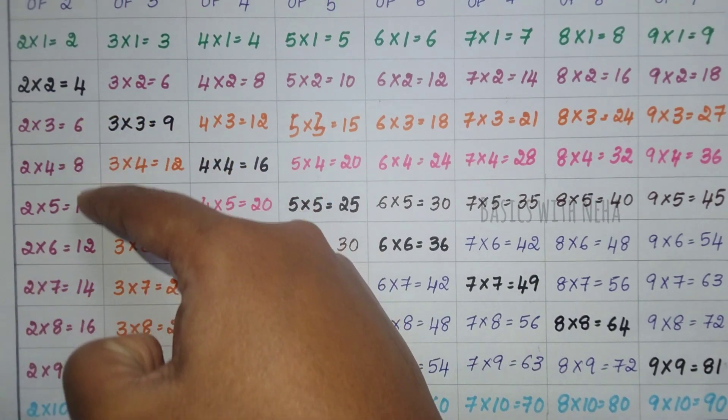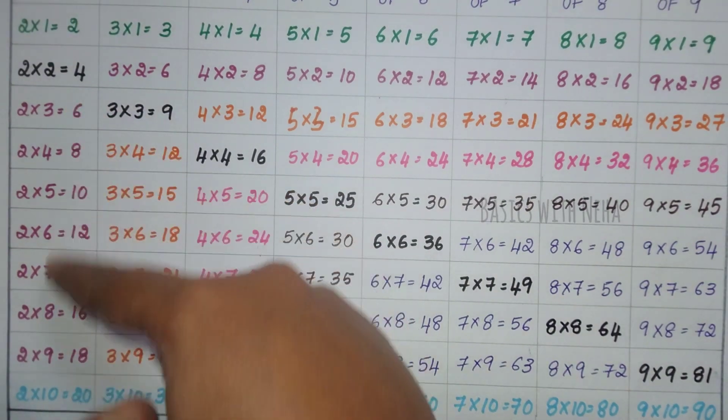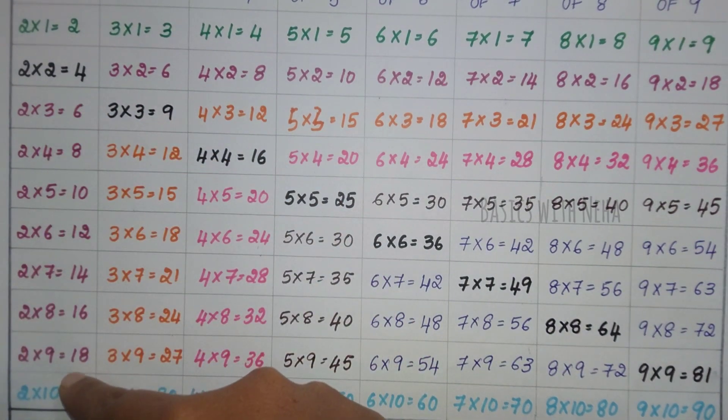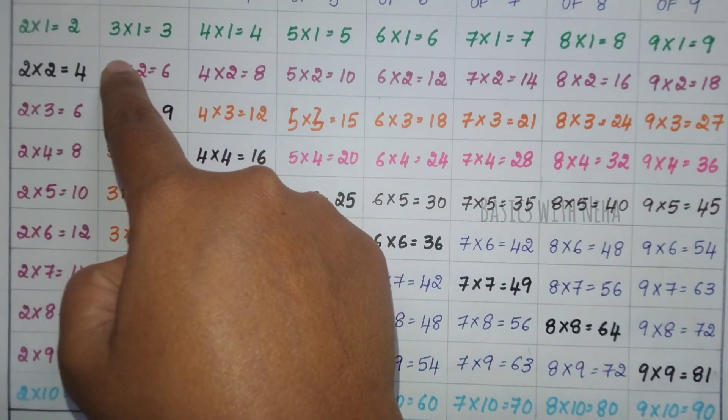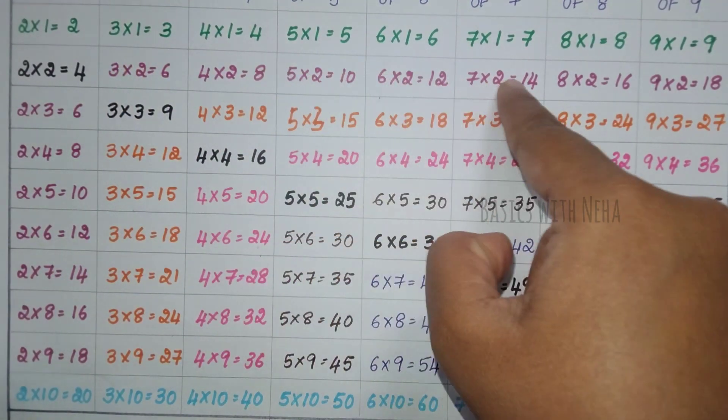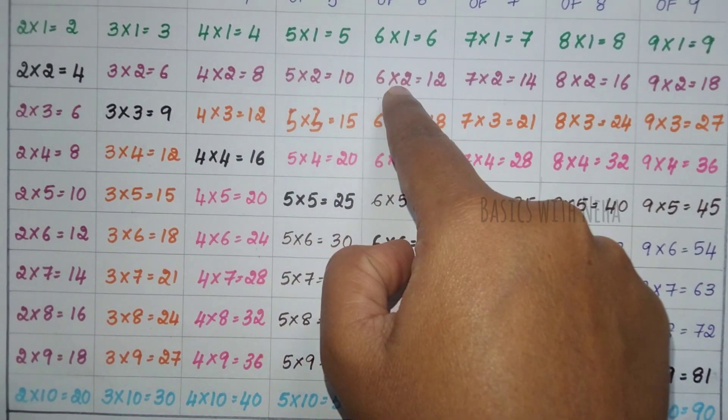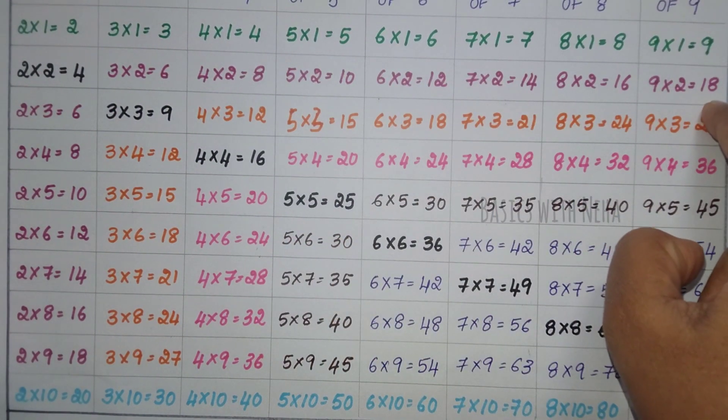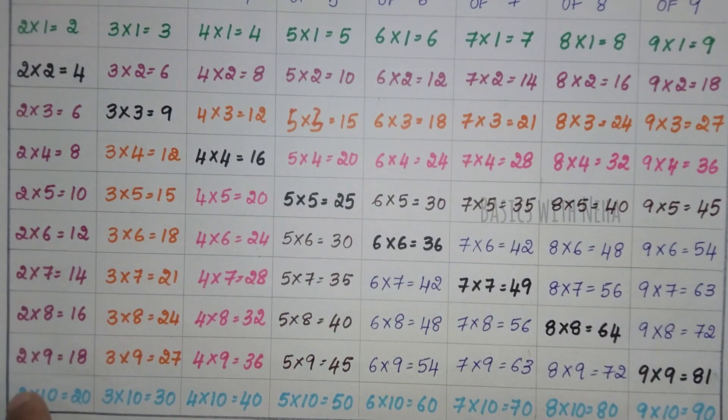Leaving that, if you come down here like this, this is 2 tables. If you know 2 tables, then you will be able to say all that is going to multiply with 2. That is 3×2s, 4×2s, 5×2s, 6×2s up to 10×2s.